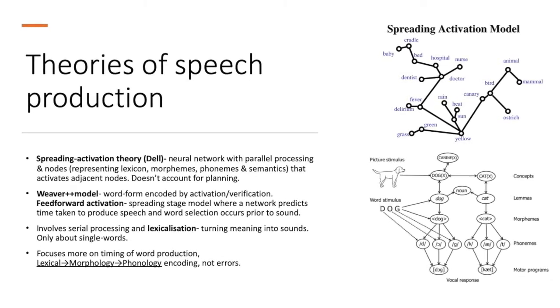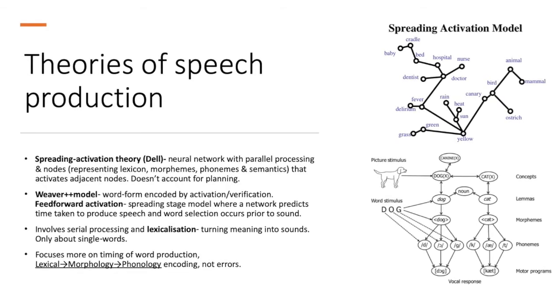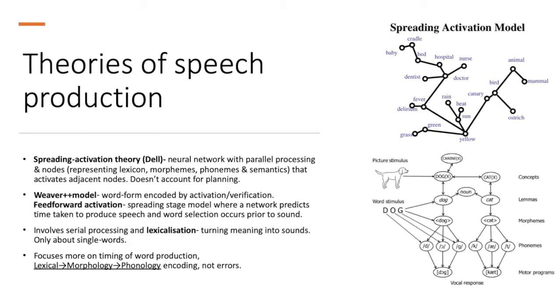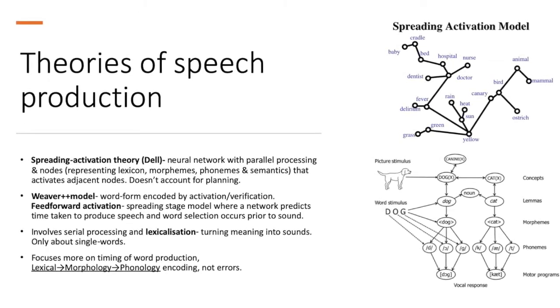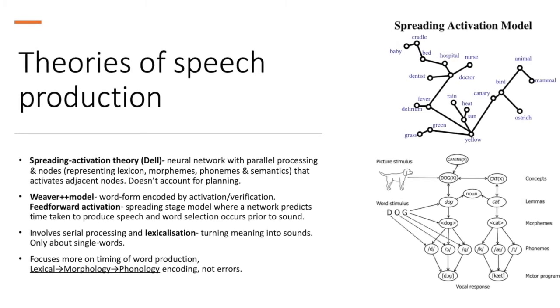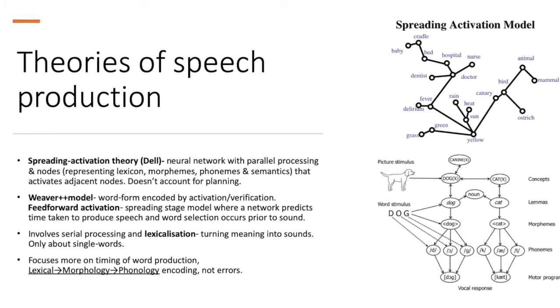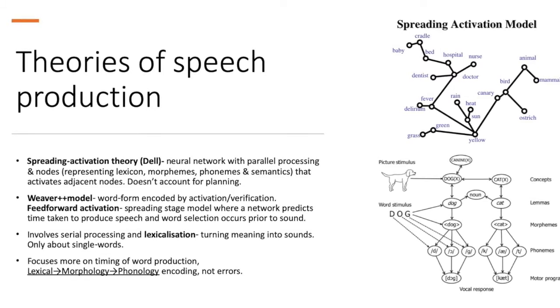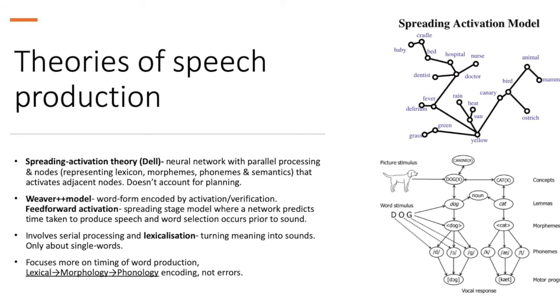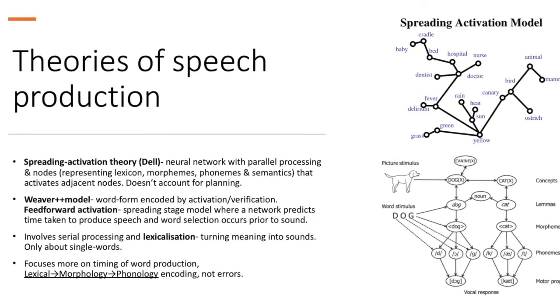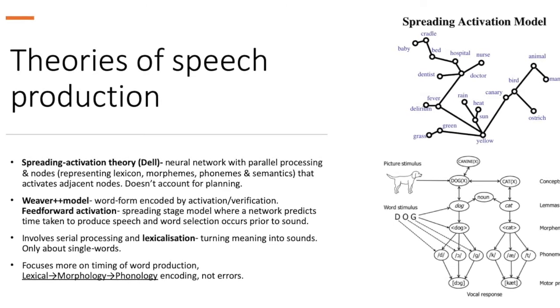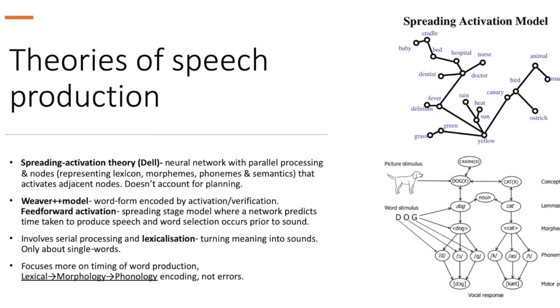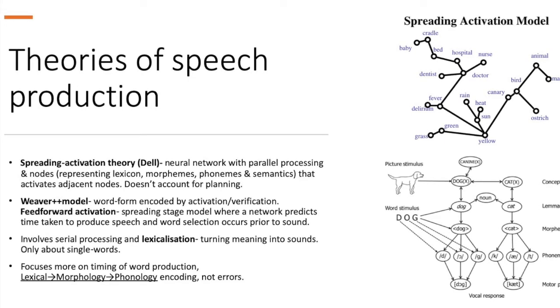Weaver++ model. This is the word form that is encoded by activation or verification. And those processes include feedforward activation, which is a spreading stage model where a network predicts the time taken to produce speech and word selection occurs prior to the creation of the sound. It also involves serial processing and lexicalization, which is turning meaning into sounds. Lexicalization only covers single words. It focuses more on the timing of word production, going from lexical to morphology to phonology encoding. And it does not account for errors.